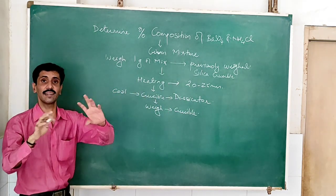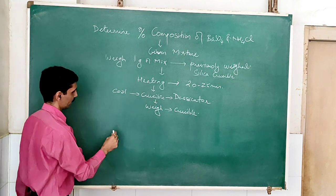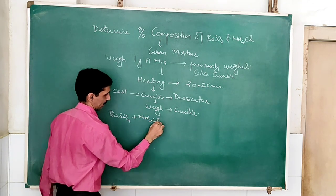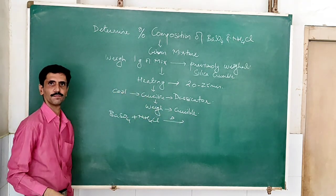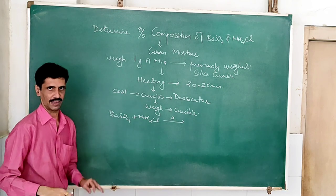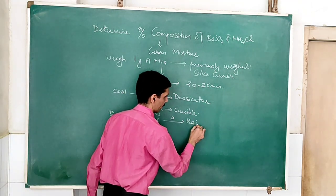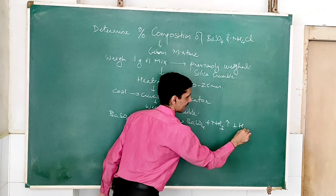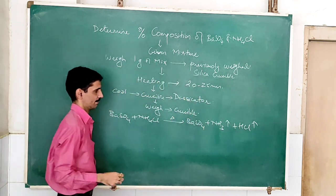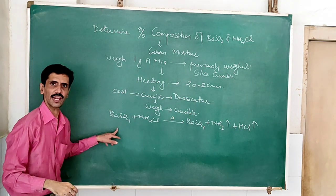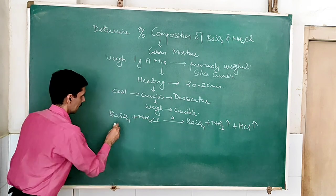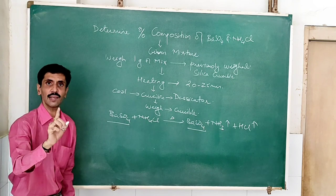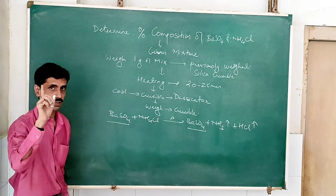Now how exactly does the reaction take place? Initially we have BaSO₄ along with ammonium chloride together. On heating, BaSO₄ remains as BaSO₄ — no change. So that means barium sulfate is stable to heat; it is thermally stable.